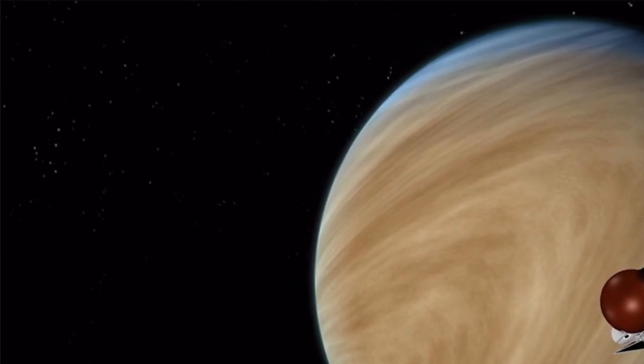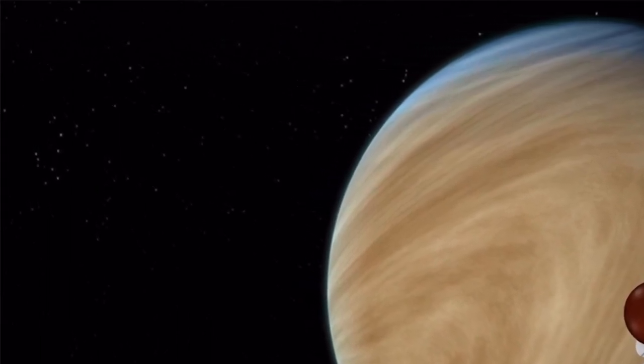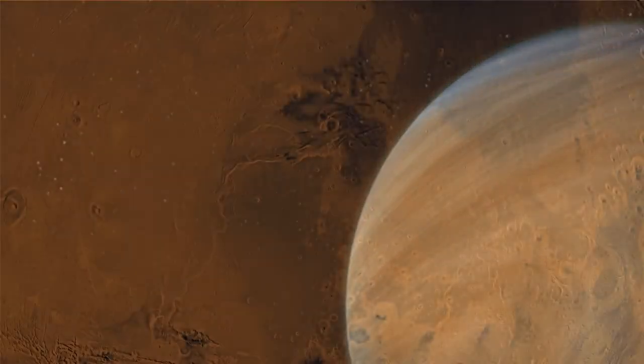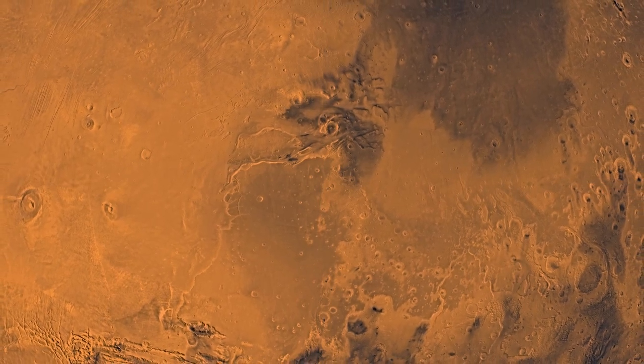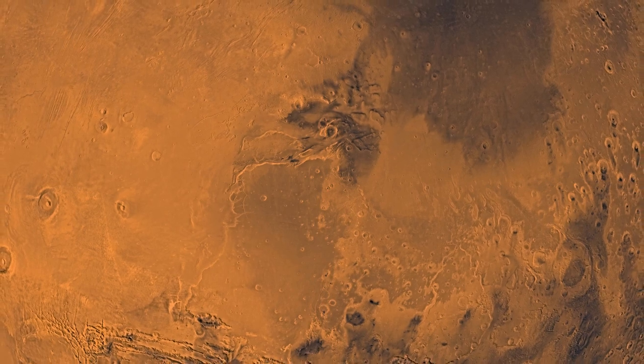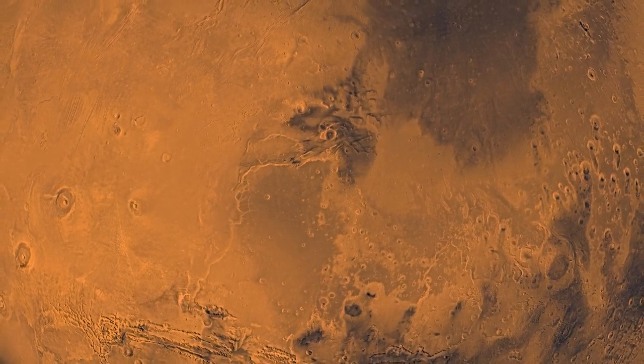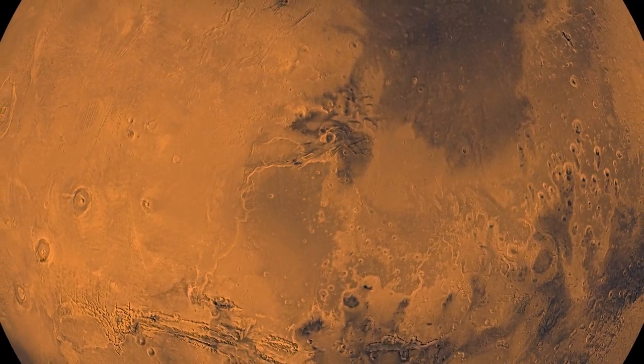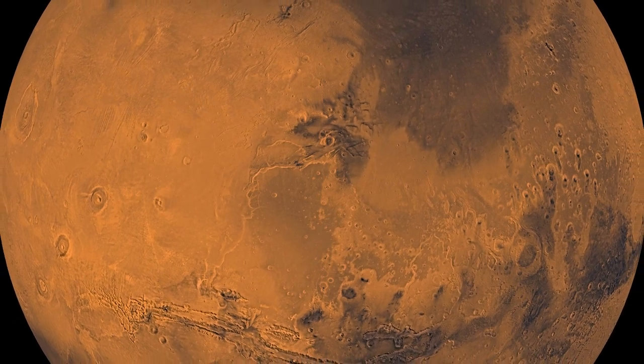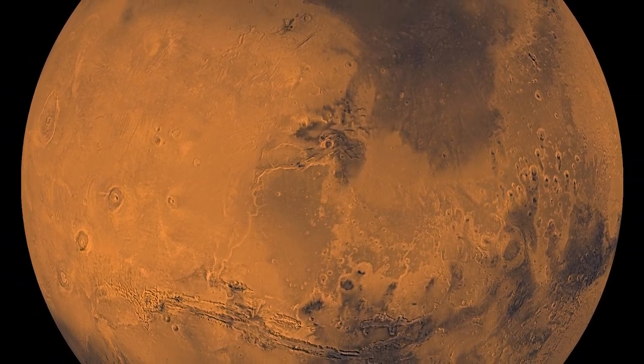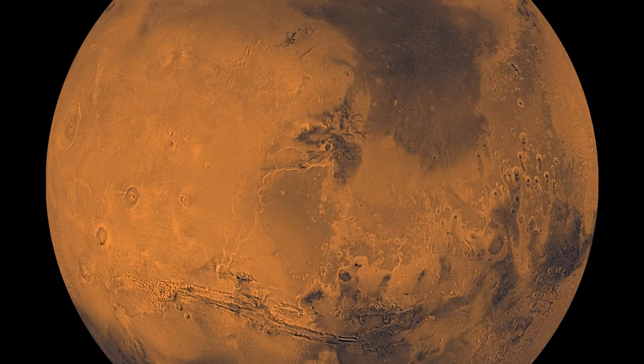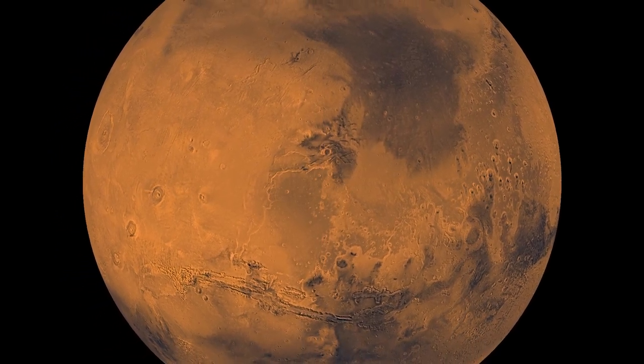That's without taking into account the atmosphere of Venus or Earth. Mars is at a distance of 1.5 AU from the Sun, so 1.5 times as far out from the Sun as Earth. 1.5 squared equals 2.25. So a square meter of Mars' surface receives more than twice as little energy from the Sun as Earth. That's the inverse square law at work.